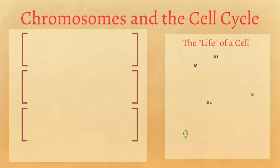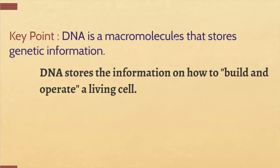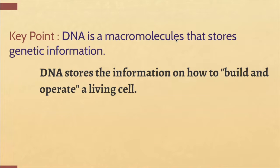Let's start with chromosomes and what they are, beginning with the general definition. Chromosomes are made of something called DNA, which you're probably pretty familiar with. DNA is a macromolecule that stores your genetic information. You can think of it this way: DNA is what stores the information on how to build and operate a living cell. It's kind of like the instruction manual — like a recipe book that describes how to make all the proteins that your cell needs.